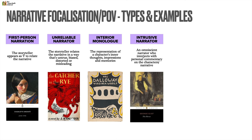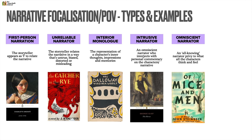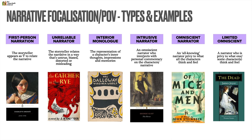The intrusive narrator, a favourite of Victorian novelists, is an omniscient narrator who interjects with personal commentary on the characters or narrative — as George Eliot does in Silas Marner. The classic omniscient narrator is a third-person, all-knowing narrator privy to what all characters think and feel — almost a god-like figure. The limited omniscient narrator knows what only one or some characters think and feel, as in James Joyce's The Dead.